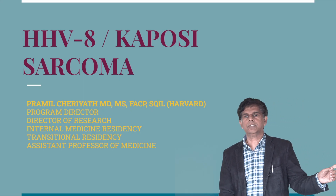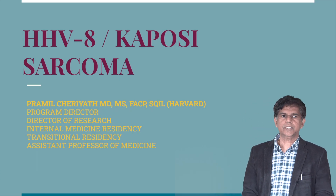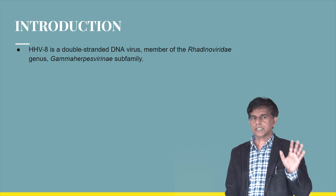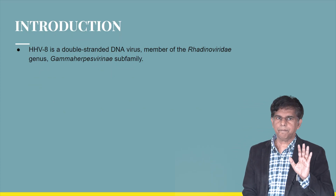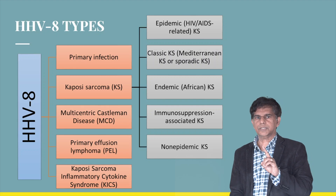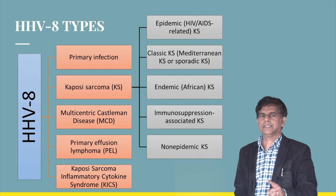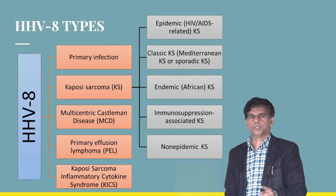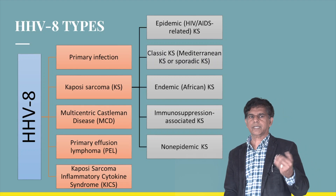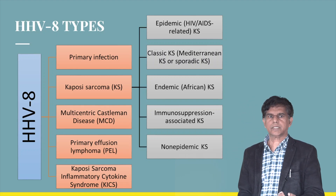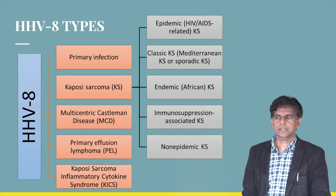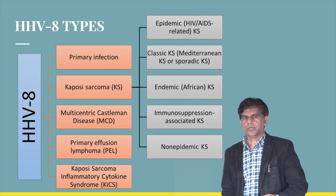HHV-8 is a double-stranded DNA virus and a member of the Herpesviridae family, genus Gammaherpesvirinae subfamily. The classifications you need to know: primary infection and Kaposi Sarcoma — which has different varieties: classic, endemic African, immunosuppression-associated, and non-epidemic. The main categories on the left are primary infection, Kaposi Sarcoma, multicentric Castleman disease, primary effusion lymphoma, and Kaposi Sarcoma inflammatory cytokine syndrome.